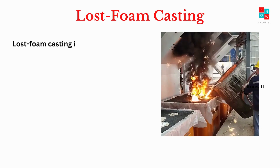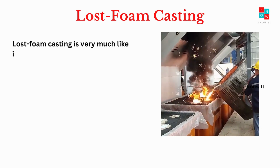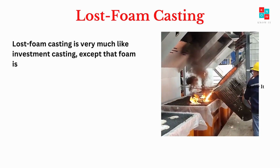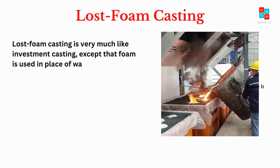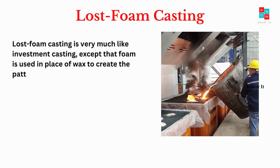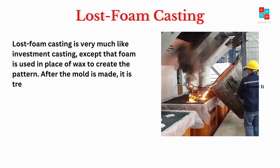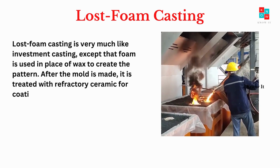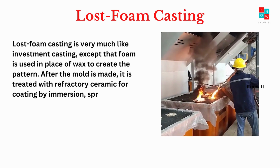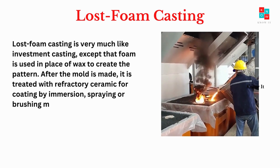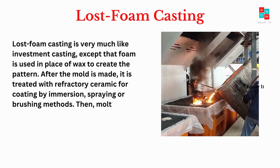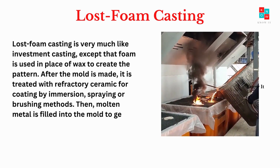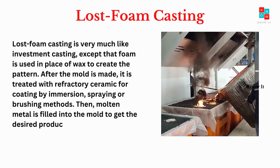Lost foam casting is very much like investment casting, except that foam is used in place of wax to create the pattern. After the mold is made, it is treated with refractory ceramic for coating by immersion, spraying or brushing methods. Then, molten metal is filled into the mold to get the desired product.